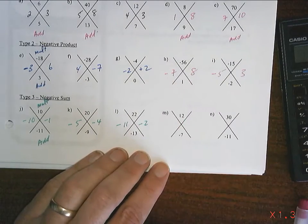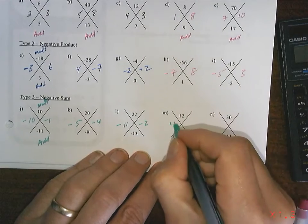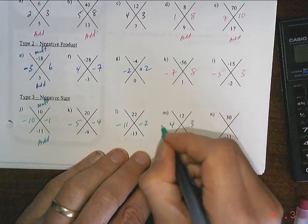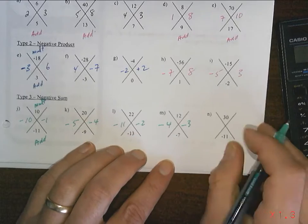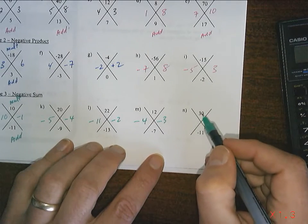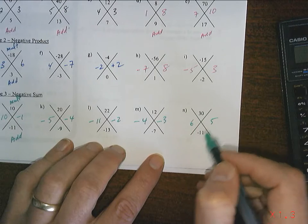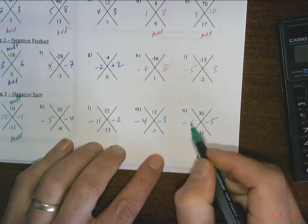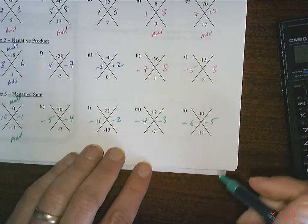12. I'm thinking 4 and 3. They have to add to give a negative and they multiply to give a positive. So, it becomes a bit of a game after a while. 30, I'm thinking 5 and 6. Positive 30, negative 11. It works.